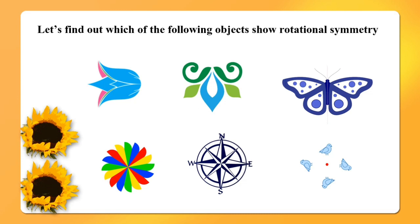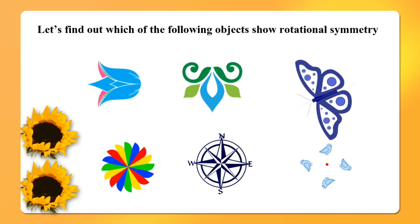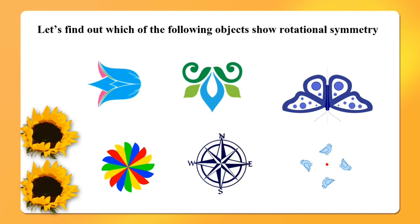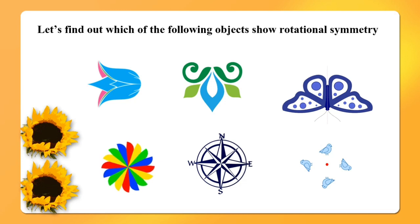Next is the third figure — a butterfly. Rotate it anticlockwise half a turn. You will get the butterfly but it is inverted; it is not looking the same as before. So it does not show rotational symmetry. Next, the fourth figure is a colourful shape. Let's rotate it along its axis — you will get the same figure, looking exactly as it was before. So it shows rotational symmetry.